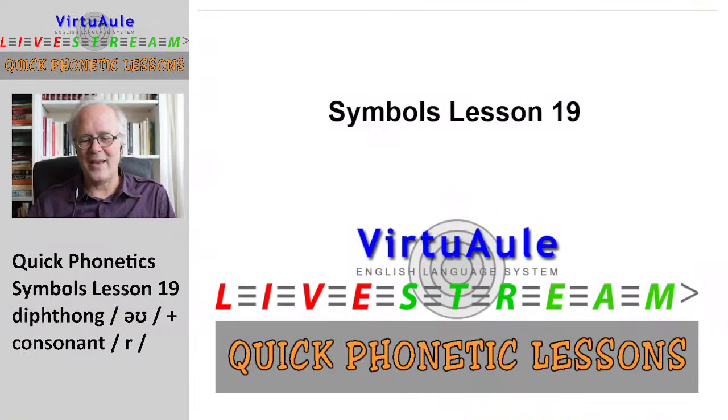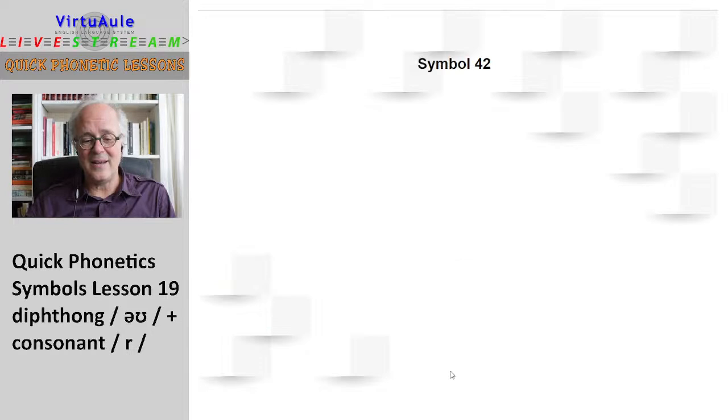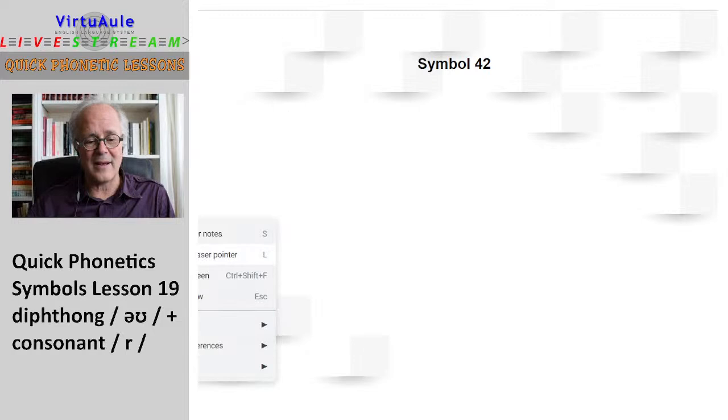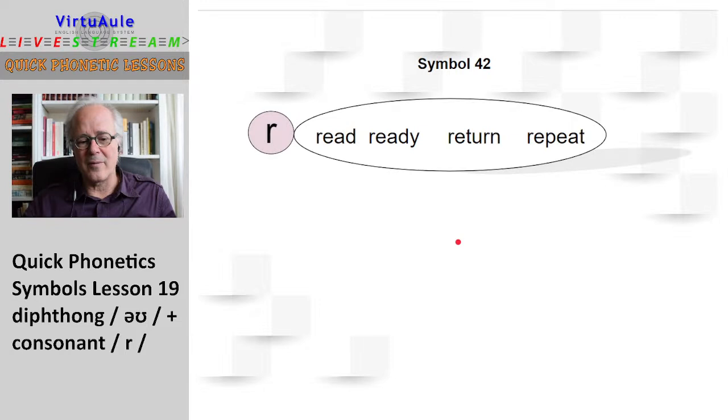Okay, unit or lesson 19. We are going to look at a couple of different symbols today. As always, we have a consonant and then another vowel, a vowel sound. This is a consonant. We have the violet color. This is a little bit difficult sound. It's the R sound. We see it in the words read, ready, return, repeat.